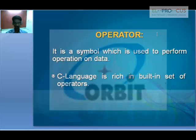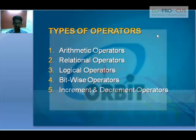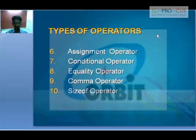The list of operators in C language are: arithmetic operators, relational operators, logical operators, bitwise operators, and increment and decrement operators. Each of these has certain sub-classifications. Not only these, there are also operators like assignment, conditional, equality, comma, and sizeof operators. These are the types of operators we have in C language.